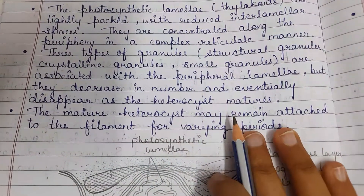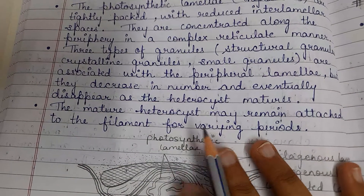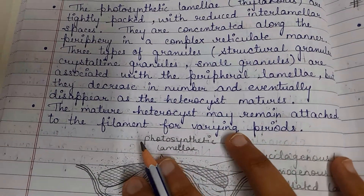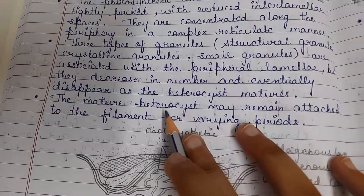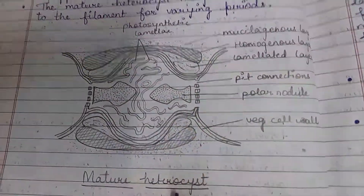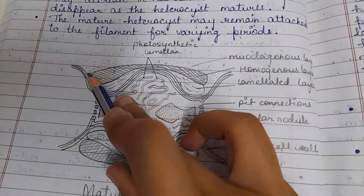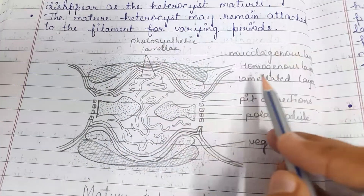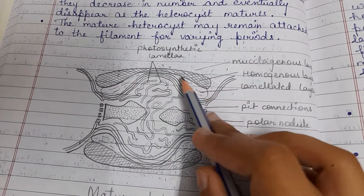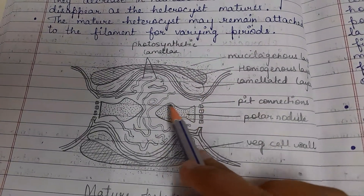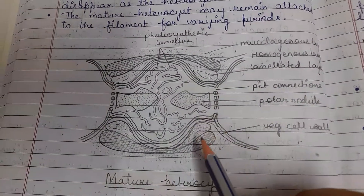The mature heterocyst may remain attached to the filament for varying periods of its life. The structure of the mature heterocyst includes photosynthetic lamellae, a mucilaginous layer, a homogenous middle layer, a lamellar inner layer, pit connections, polar nodules, and vegetative cell walls with three distinct layers.